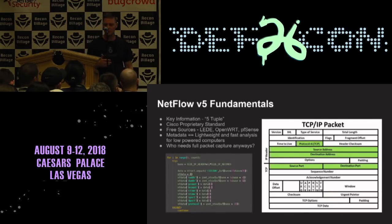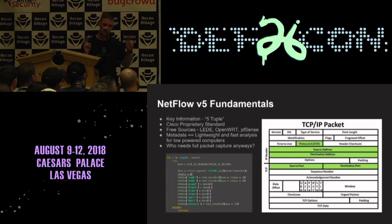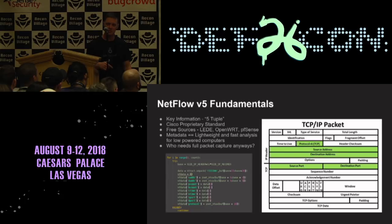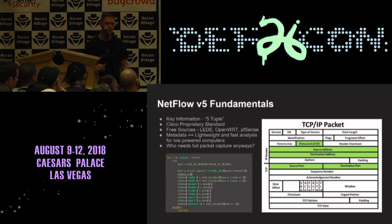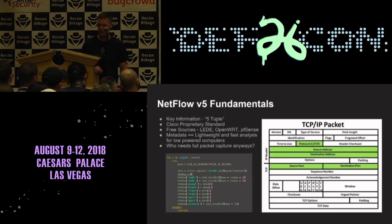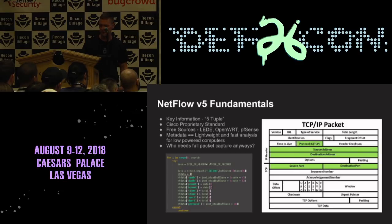For anybody that doesn't know, NetFlow is basically based on the five-tuple. It's a Cisco proprietary protocol, but there are a lot of free and open source similar protocols that use the exact same byte orders. It captures the source and destination IP address, source and destination port, and the average size of the bytes for the session. With that information you can see who you're talking to, who's talking to you, and how much traffic is going back and forth. The bottom left is the actual parser I used where I broke out the actual bytes of the packets, which are all stored into a SQL database in the back end.